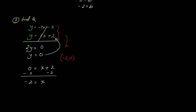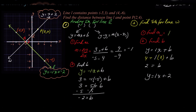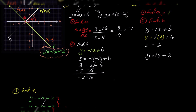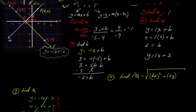So Q is negative 2, 0 — and that looks right on the graph. Step 4: find the distance PQ using the distance formula — the square root of the change in x squared plus the change in y squared. P is (2, 4) and Q is (negative 2, 0).